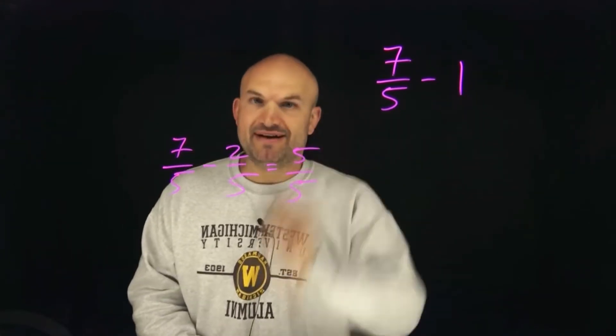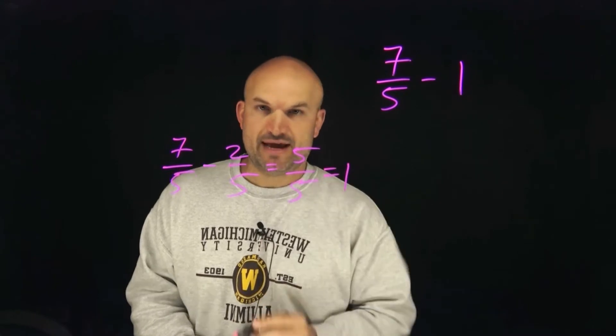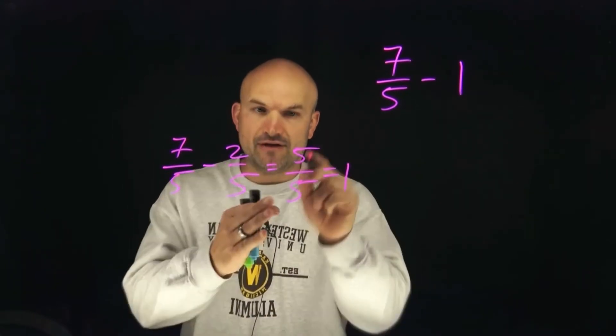Five divided by five, how many times does five go into five? Well, that is going to equal one. Now, this is really important. Five over five is equal to one.